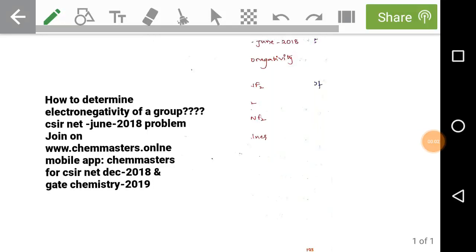Hi, now we are discussing how to determine electronegativity of a group. We have many parameter scales to determine electronegativity: Pauling scale, Mulliken scale, Allred-Rochow parameters, etc. We can use these to determine electronegativity of groups.